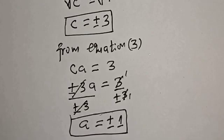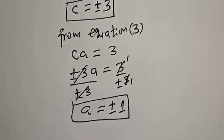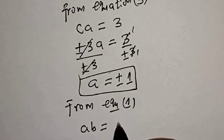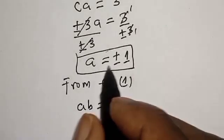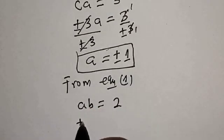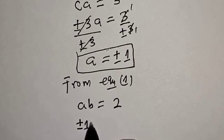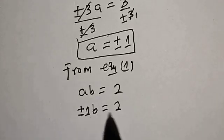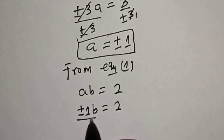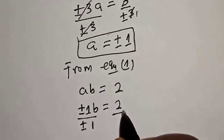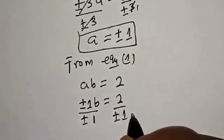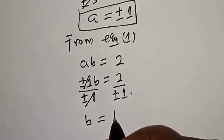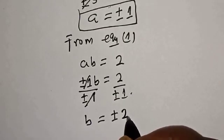Now we have the values of a and c. We find b from equation 1: ab is equal to 2. Since a is plus or minus 1, plus or minus 1 multiplied by b is equal to 2. Dividing both sides by plus or minus 1, b is equal to plus or minus 2.